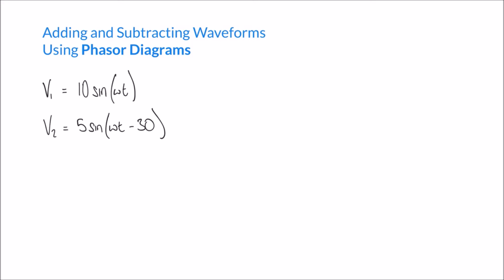Going back to our two waveforms V1 and V2, just like in our last video, the elements we're concerned about are the amplitudes of our two sine waves — in this case 10 and 5 — and any phase shifts in our waveforms. In this case we see a phase shift of minus 30 degrees in V2. These parameters are going to be represented in our phasor diagram when we come to draw it.